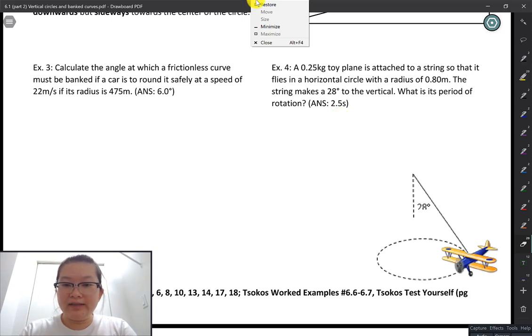So here we have a toy plane, example four, and is attached to a string right there, so that it flies in a horizontal circle with a radius of 0.8 meters. So if you imagine going to a toy store, maybe you had a chance of seeing something dangling from a wall, and it's kind of flying around in circles because it's tied onto a string. So this is exactly what this example is referring to. This one is a plane for that matter.